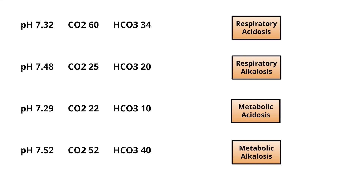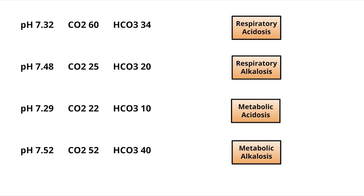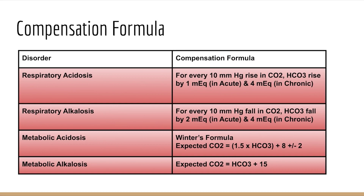Example four: pH is 7.52, which is more than 7.45 — alkalosis. CO2 and bicarbonate are both increased and in the same direction as pH, so it is a metabolic process — metabolic alkalosis. With these examples it becomes much simpler to decide acidosis or alkalosis and respiratory or metabolic. Once you identify these two steps you can attempt 90% of the questions.